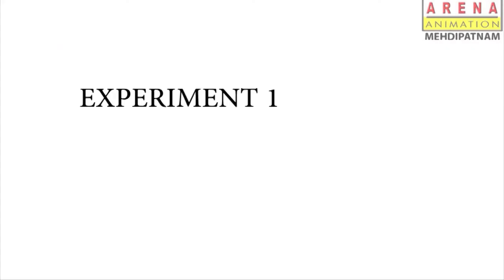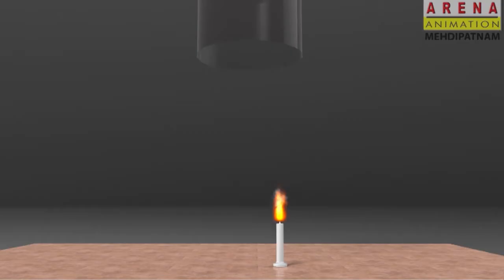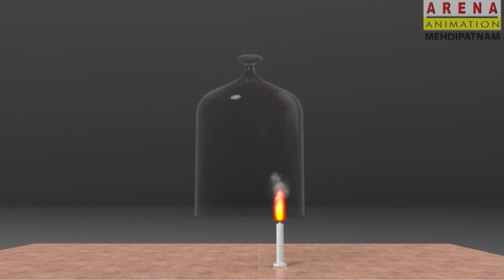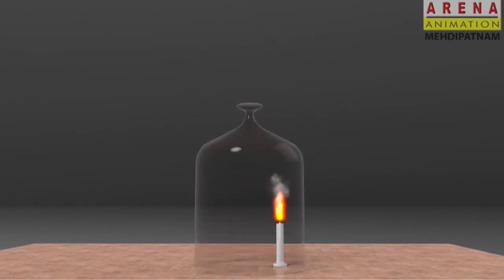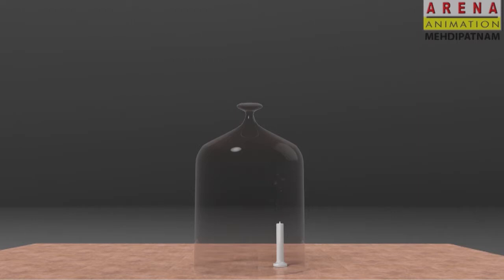Procedure - Experiment 1: Light up the candle first. Now keep the bell jar on the burning candle. Wait for some time to see the result. Within seconds, the light of the candle is put off.